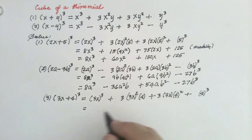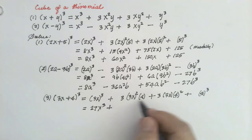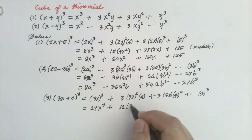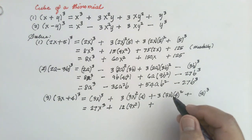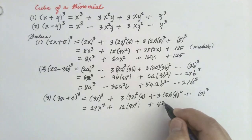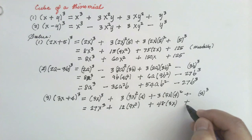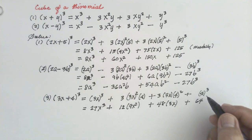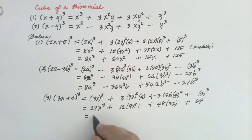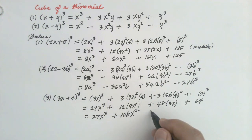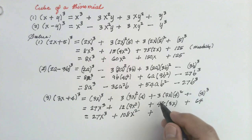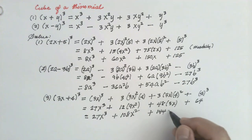I will show the second step, which can be done mentally. This will become 27x cube, plus this will become 12 times 9x square — that is 108x square — plus this will become 16 times 3 is 48, times 3x gives 144x. Plus this will become 64. So the final answer is 27x cube plus 108x square plus 144x plus 64.